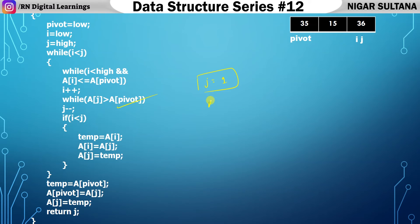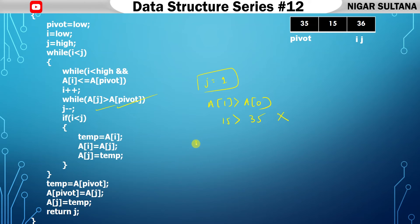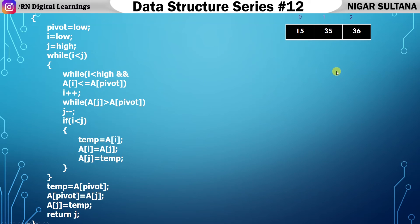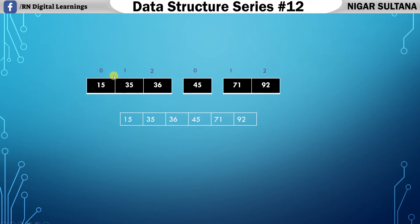Since i and j have crossed, check if i < j: 2 is not less than 1 — false, so no swap of i and j. Instead, swap the pivot value with the j value. Pivot value is 35 and j value is 15 — they get swapped. 35 moves to position zero and 15 moves to position one. The left subarray is now sorted.